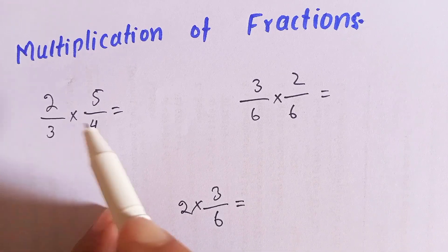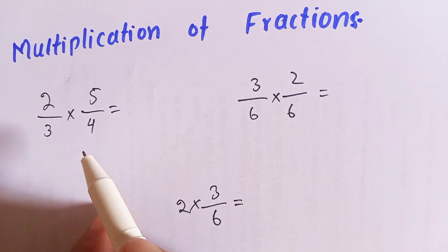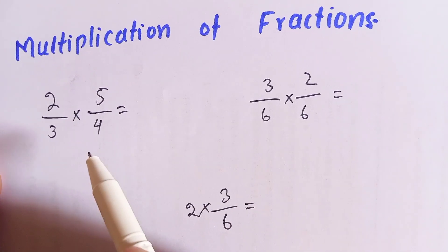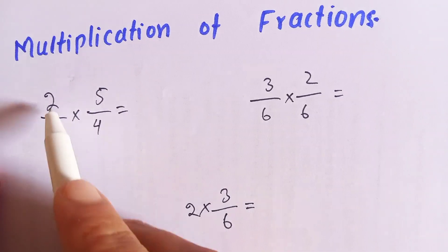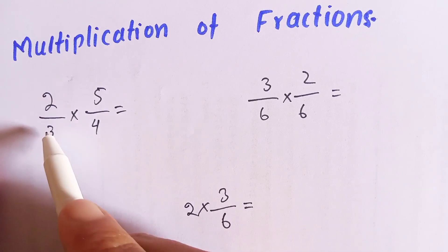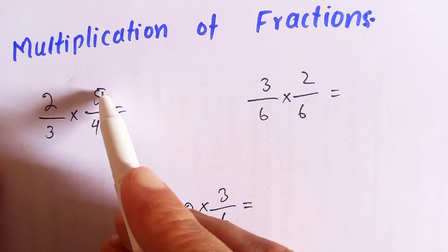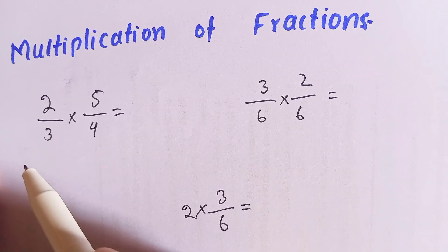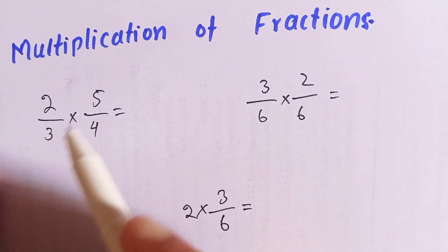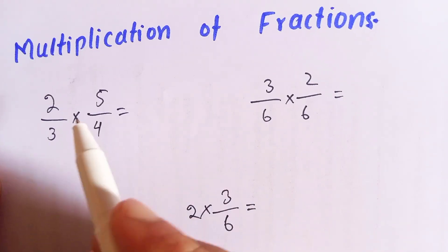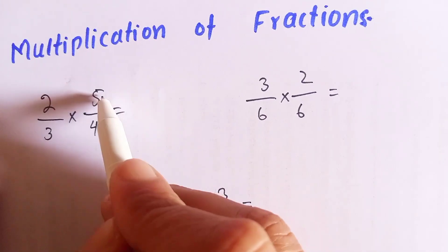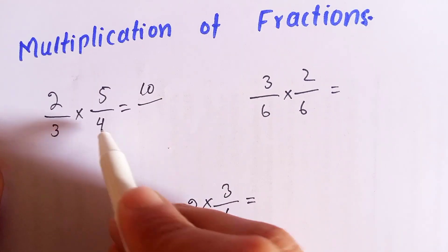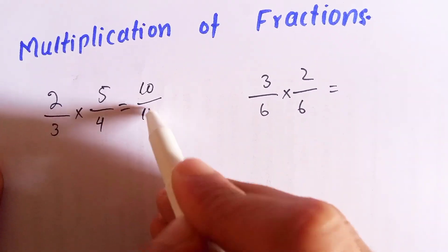In this example we are going to take some examples to multiply fractions. Here the first fraction is two over three, multiplied by five over four. It is very easy to multiply fractions — two times five is ten, and three times four is twelve.